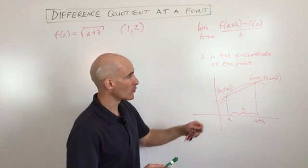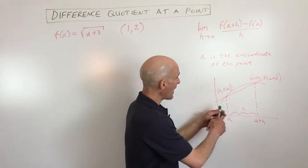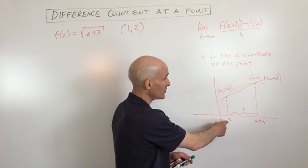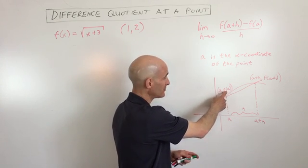And just to show you a quick refresher here, what we have is we have our point a comma f of a, meaning if you put that a value into your function, that's the y value.